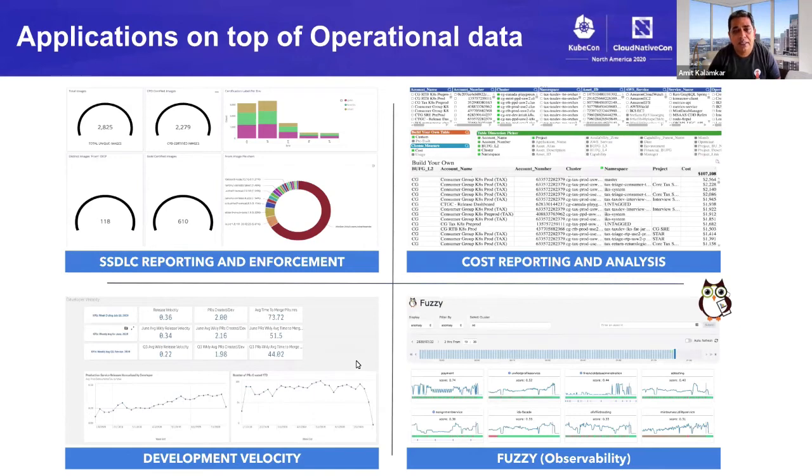These are some of the applications that are currently using our operational data platform. First, we have a security use case. We collect the data related to security, including lineage, what piece of software is running, right from the time we build a container until the end of the life cycle when it's running in production. We can figure out what CVE affects which piece of code, not just in build time, but at run time. Next is cost reporting and analysis. This helps us attribute cost for any resources, CPU, memory, to a particular service and an account owner. Another major use case is development velocity.